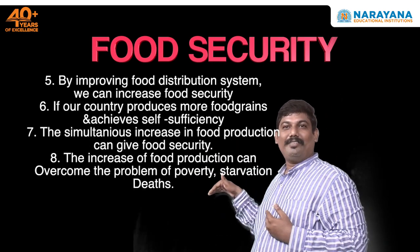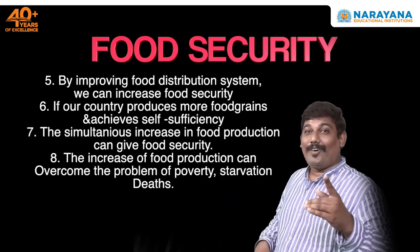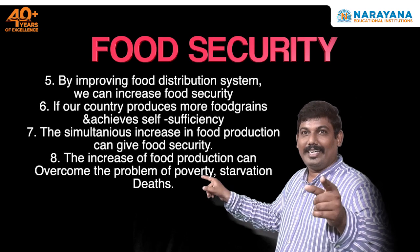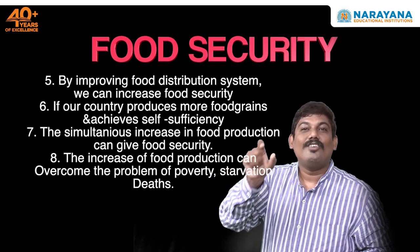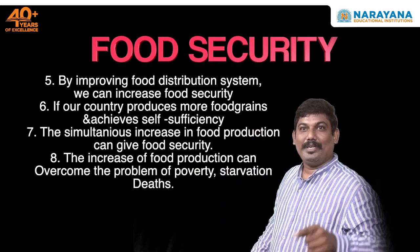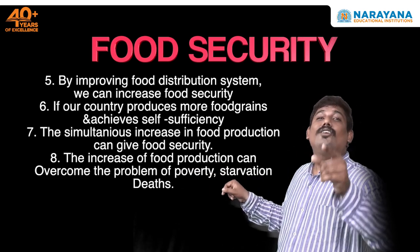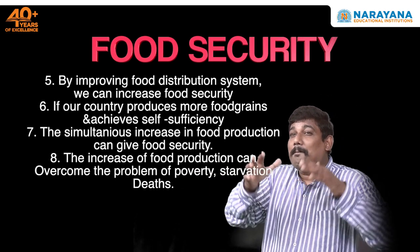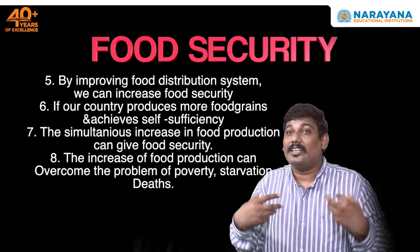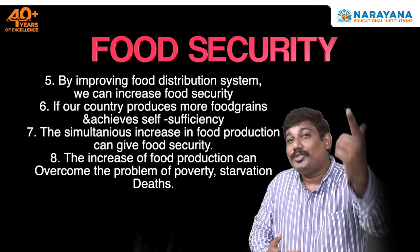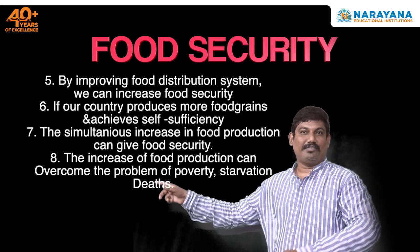Fifth point: by increasing the food distribution system we can increase food security. If you put in place a greater number of distribution systems, food will reach more people. Once it reaches the people, the government can automatically provide food security. That is the fifth point.